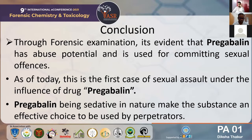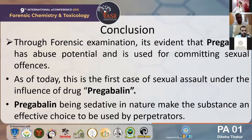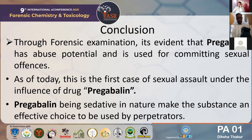In conclusion, through forensic examination, it is evident that Pregabalin has abuse potential and is used for committing sexual offenses. As of today, this is the first case of sexual assault under the influence of the drug Pregabalin. Even if we go through the literature, cases of abuse and deaths were reported, but this is the first case of sexual assault under this drug. Pregabalin being sedative in nature, it is used in the treatment of various diseases like anxiety and pain reduction, and being sedative, it becomes an effective choice to be used by perpetrators.